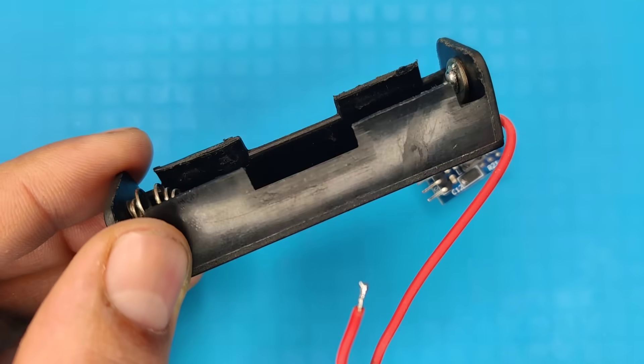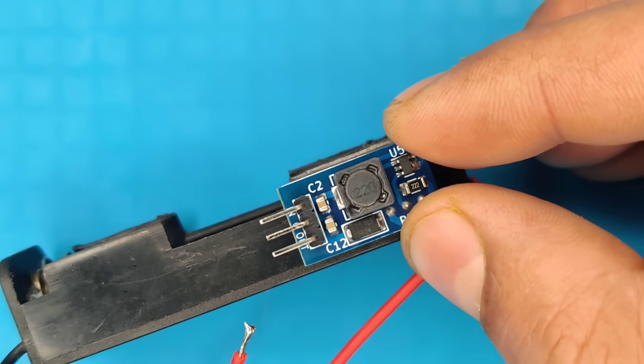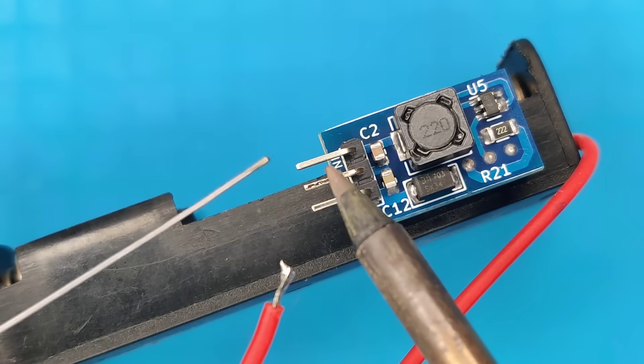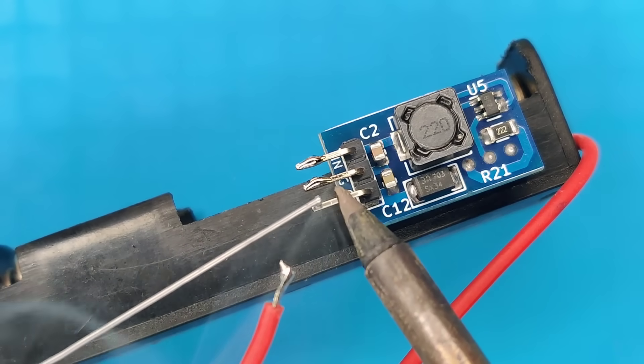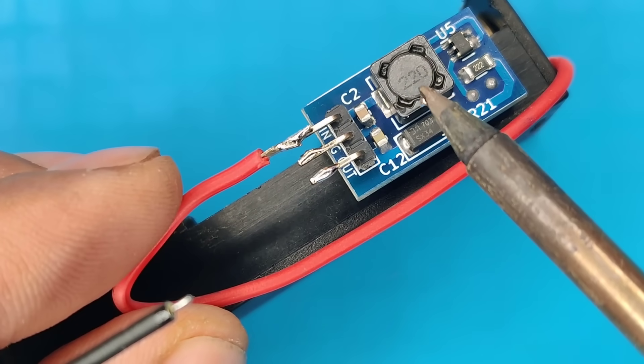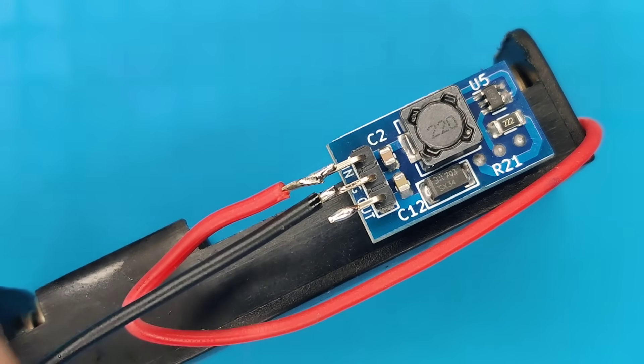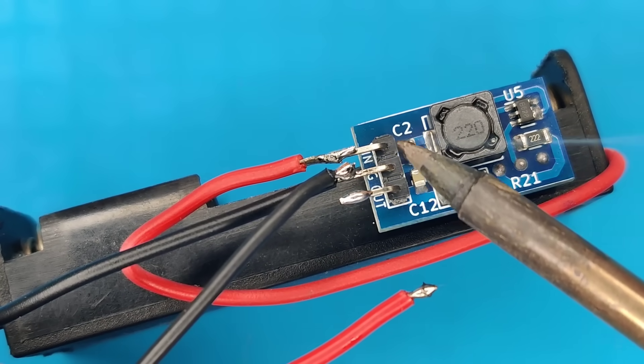Now you need this battery holder and paste this booster module at side of holder. Pre-solder the pin headers, then solder the input connection from battery. Use alligator clip wires and solder the output connections.